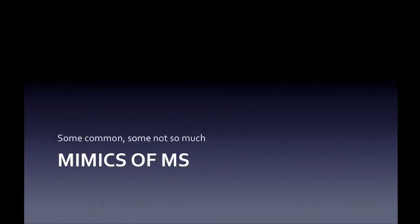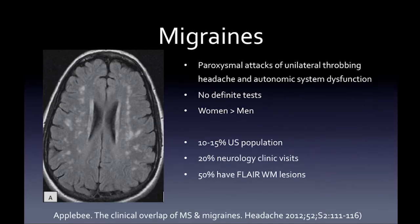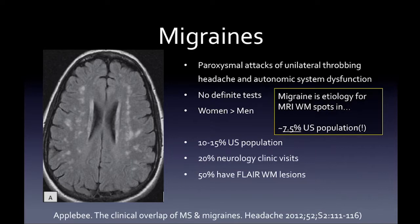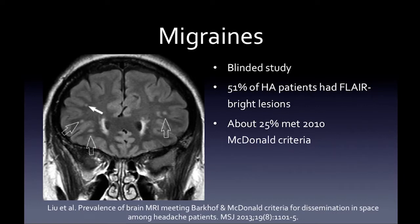Let's get into the mimics of MS — some common, some zebras. Migraines: paroxysmal attacks of unilateral throbbing headache and autonomic dysfunction with no definitive test, more common in women. Migraine is the etiology for white matter spots in about 7.5% of the US population, whereas MS only affects 0.1%. So in daily practice, you're far more likely to encounter migraine-related white matter spots than MS.